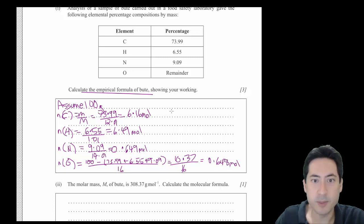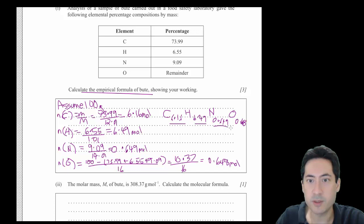So the empirical formula will be C 6.16, hydrogen 6.49, nitrogen 0.649, and oxygen 0.648. I divide all of those by the smallest number, which is 0.648, all across here.